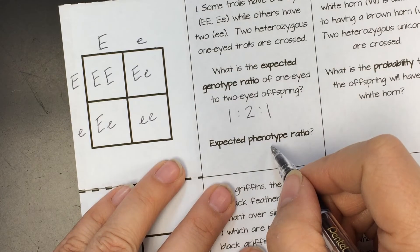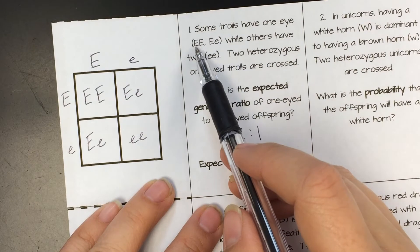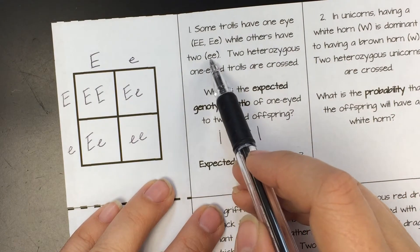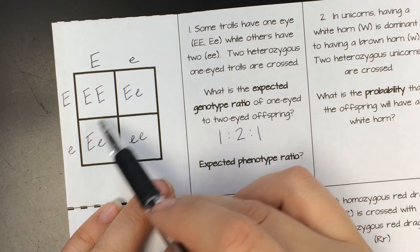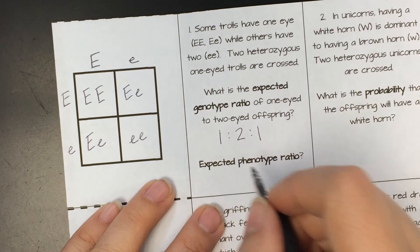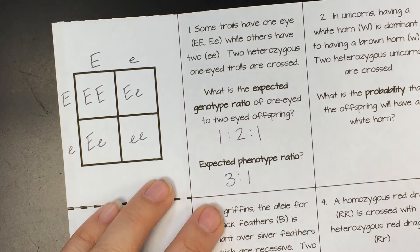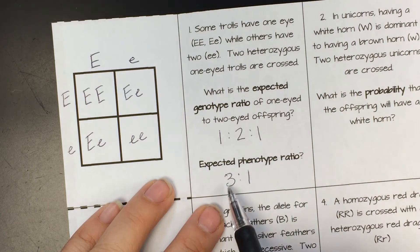The phenotype ratio, on the other hand, since we're showing complete dominance, since if it has the big gene, it'll be dominant with one eye, and it has to have the two littles to be a two-eyed monster, three out of four chance that it'll be big big, with a one out of four chance that it will be a two-eyed offspring. So we would say we have a one to two to one ratio on the genotype, and a three to one ratio on the phenotype.